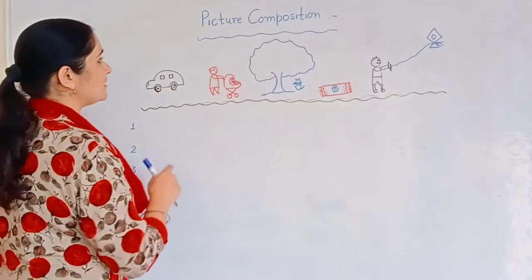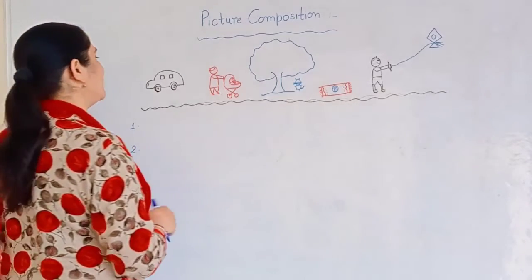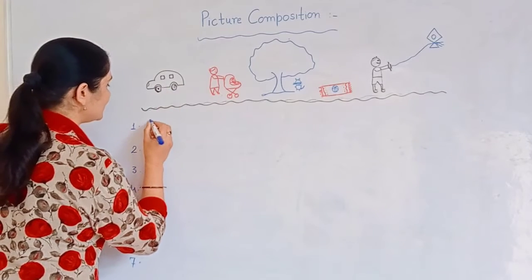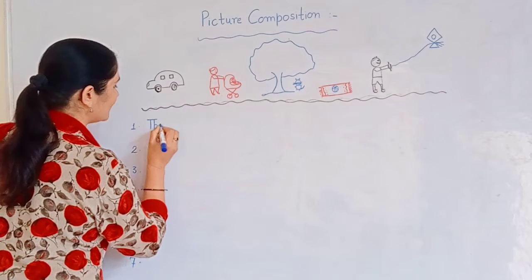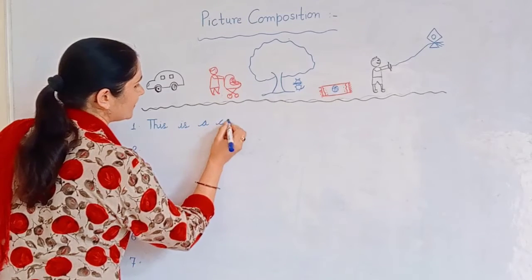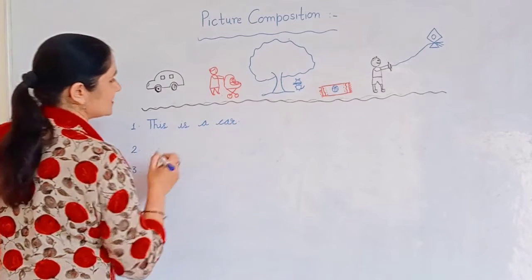First we will see the picture and use this or that. So this is a car. Main sentence: This is a car.